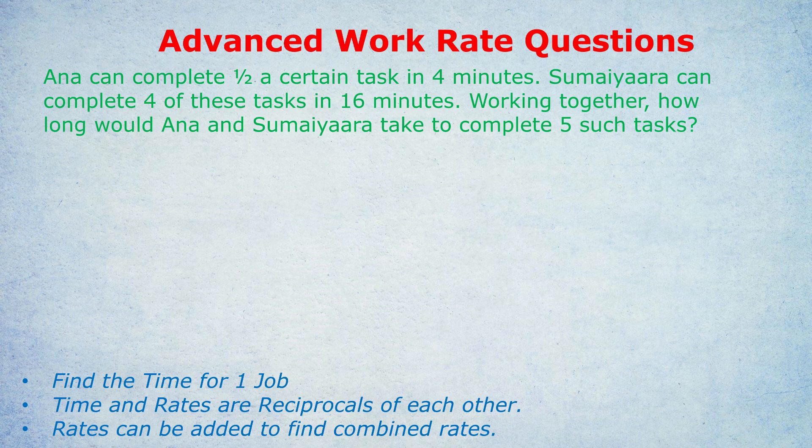Next, we add those rates to find the combined rate. One quick exception: if a tap is pouring into a tank and a plug is draining it, you would subtract the plug's rate. But nine times out of ten you add the rates because two people or objects are working together. Finally, once we've found the combined rate, we do the reciprocal to find the combined time — and that's usually the answer. They make these hard by varying what they're asking for, but it's always the same process.